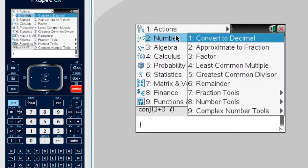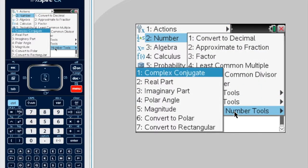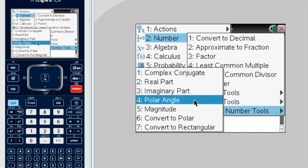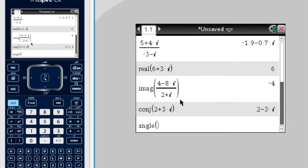And let's try another one. Polar angle. Okay, so I want to know the angle. Let's just say 2 plus 3i again.